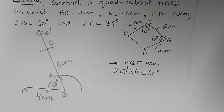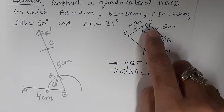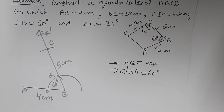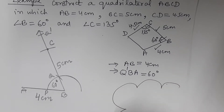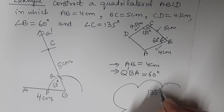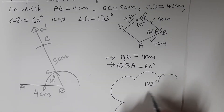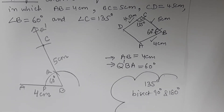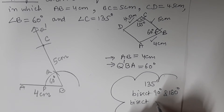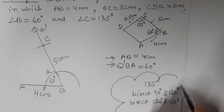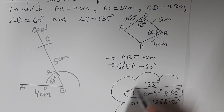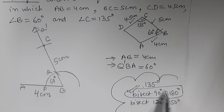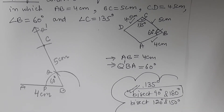After this we have to construct an angle of 135 degrees at point C. For constructing 135 degrees, you can either bisect 90 degrees and 180 degrees, or bisect 120 degrees and 150 degrees. The easier method is to bisect 90 degrees and 180 degrees — 90 plus 180 is 270, and 270 divided by 2 equals 135.